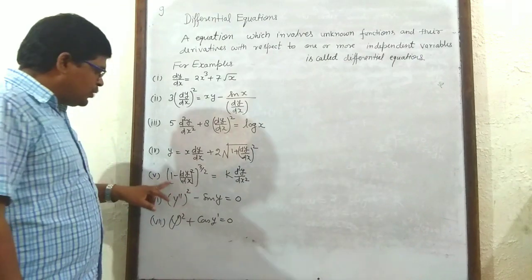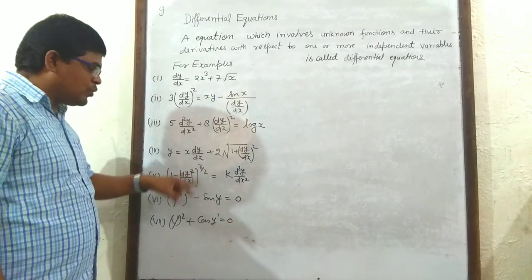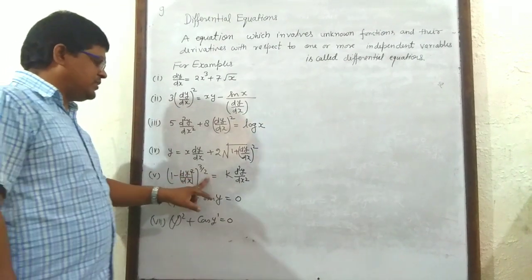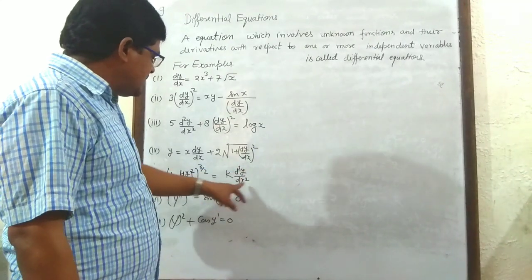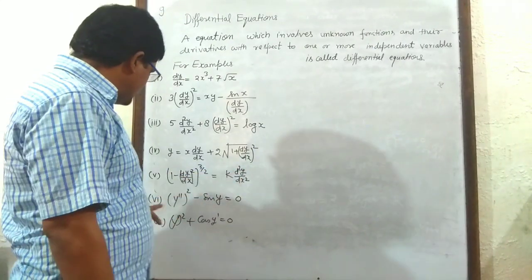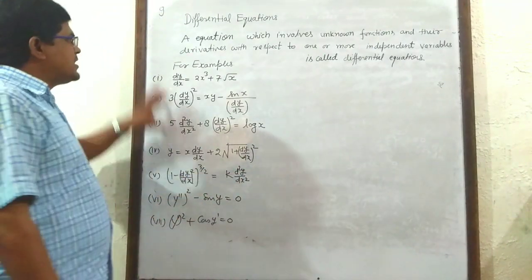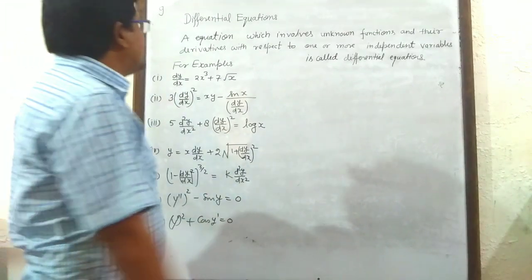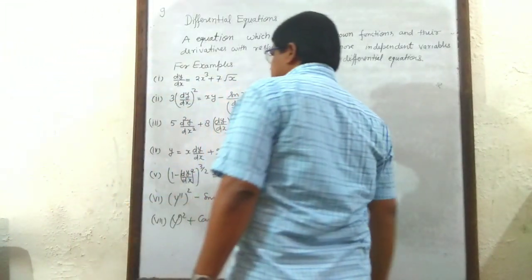Fifth example: (1 − (dy/dx)²)^(3/2) = k·d²y/dx². These are the examples of differential equations.